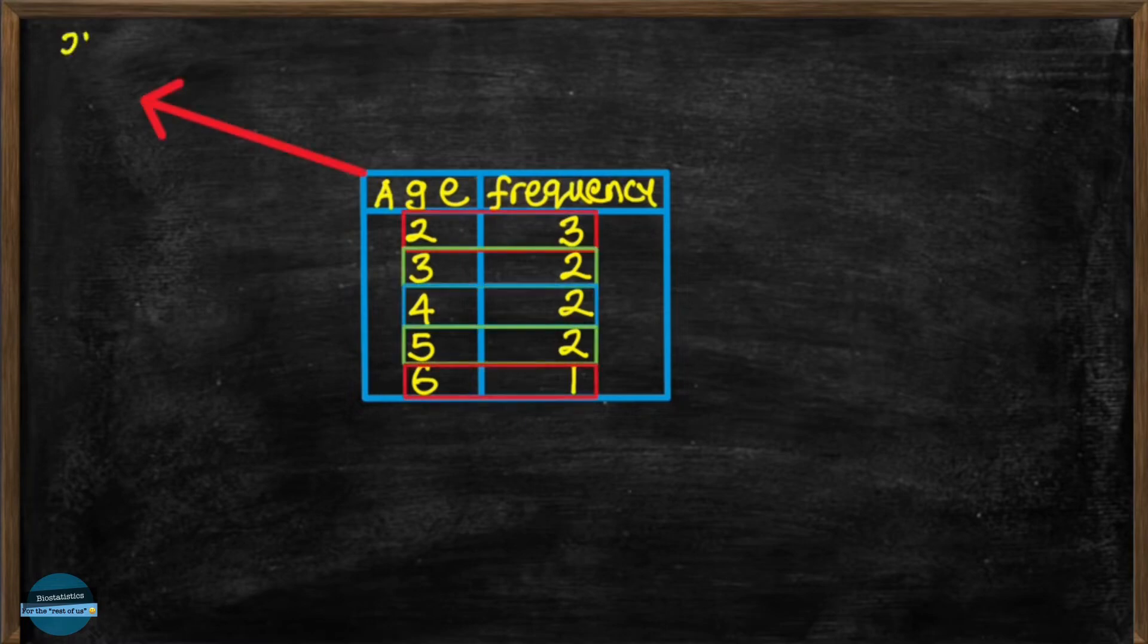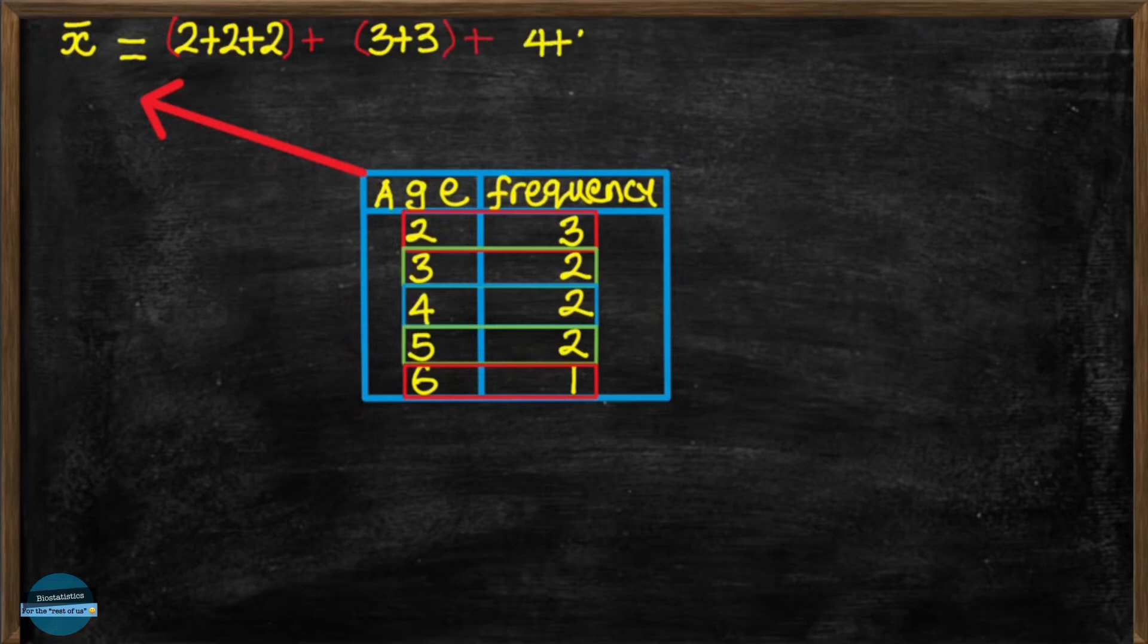So we could do the mean as 2 plus 2 plus 2, since 2 occurs 3 times, and 3 plus 3, since 3 occurs 2 times, and 4 plus 4, then 5 plus 5, and then plus 6.